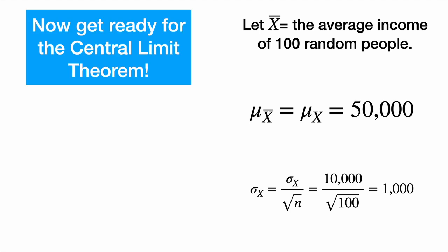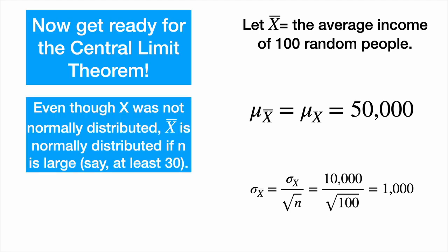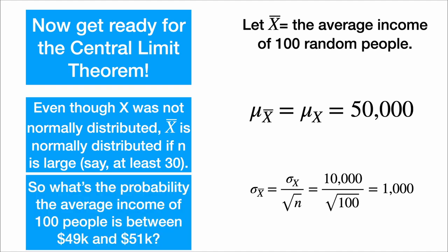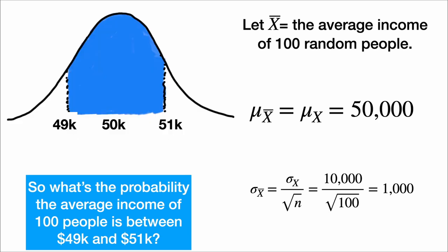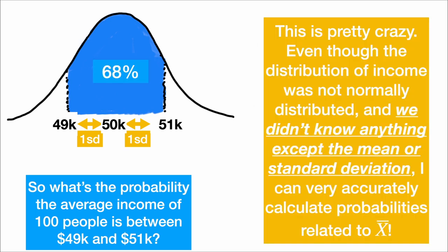And now get ready for the central limit theorem. Even though x was not normally distributed, x̄ is normally distributed, as long as n is large, say at least 30 is a common rule of thumb. So what's the probability the average income of 100 people is between $49,000 and $51,000? Well, that probability, because those are one standard deviation away from the mean, is 68%.